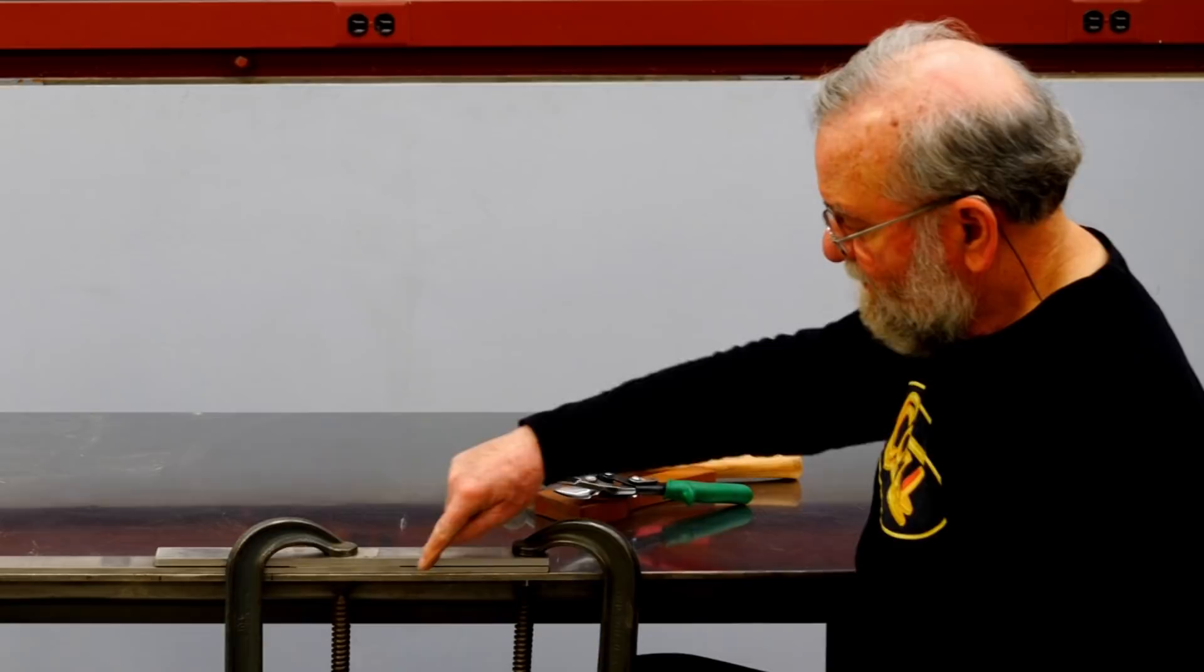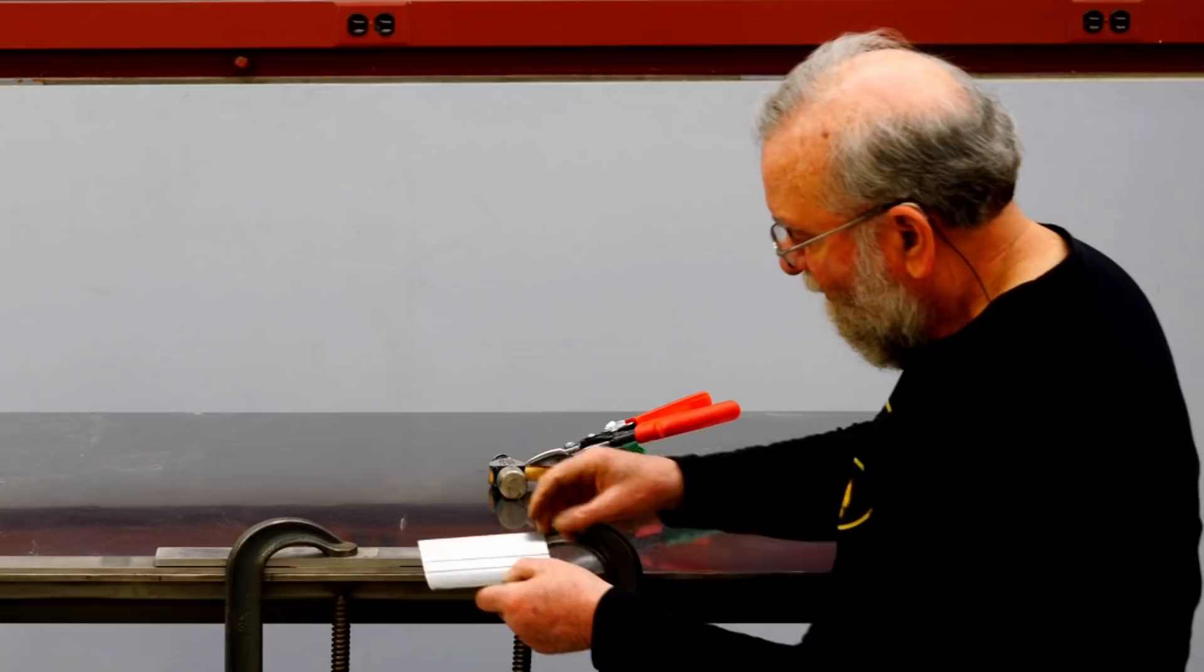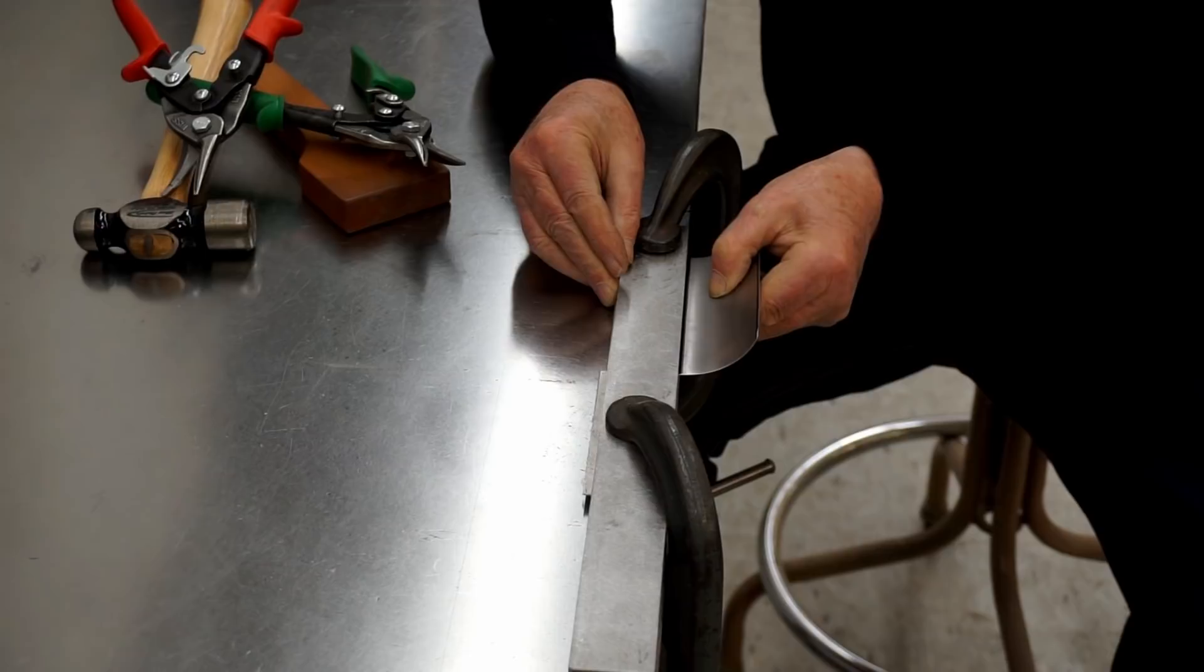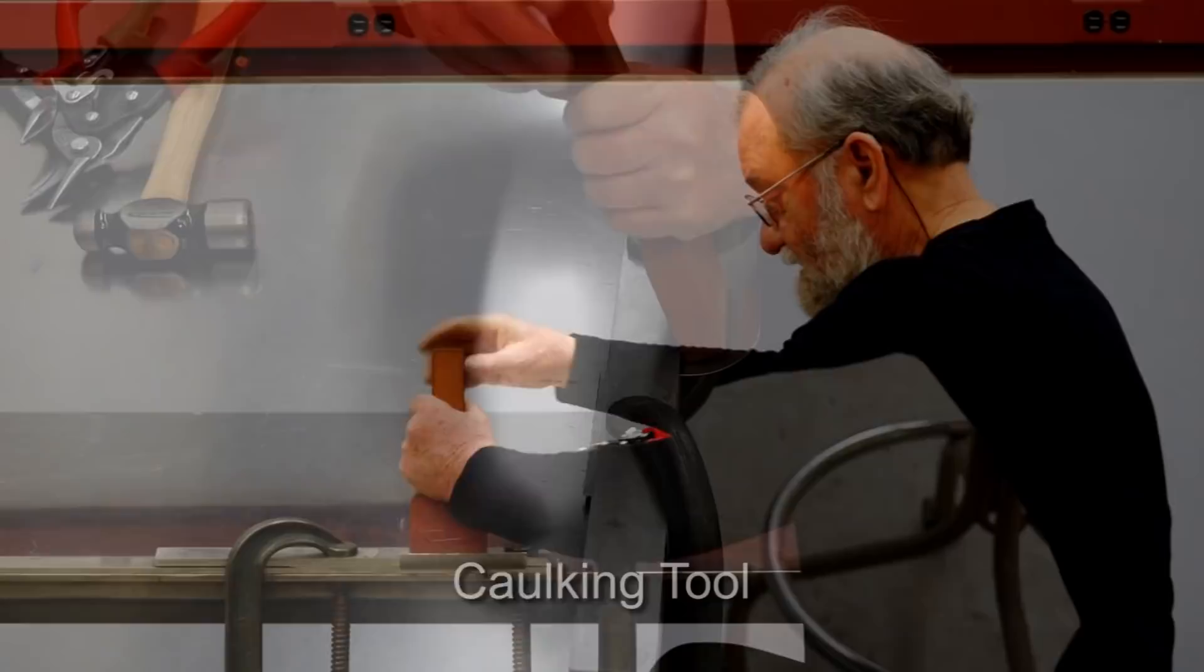And I have two cold roll steel bars clamped on my bench with a gap between them just slightly thicker than the metal. So I'm going to slip the metal into place and move it right up to that bend line, then I'll clamp it into place and I'll use a caulking tool to make the bend.